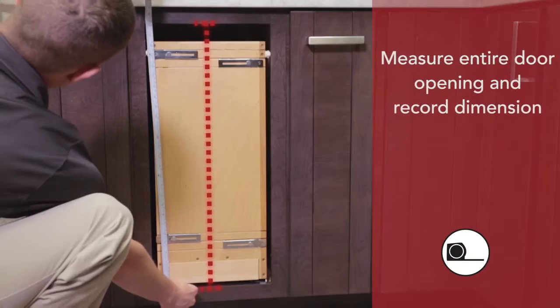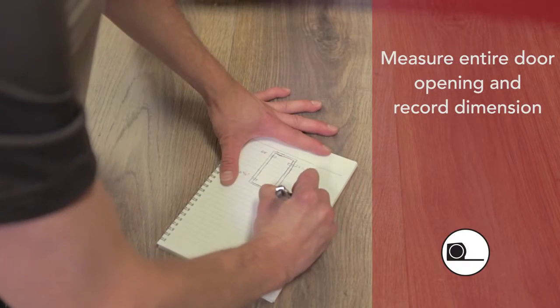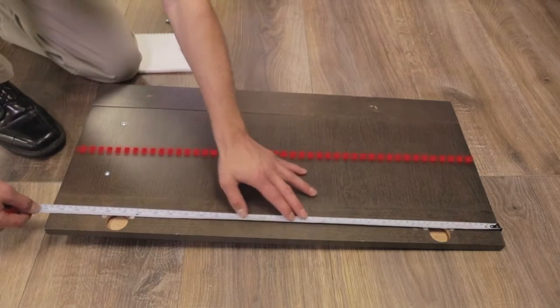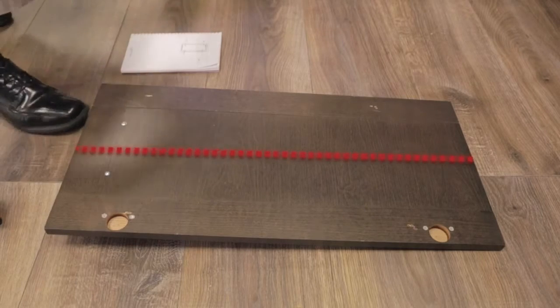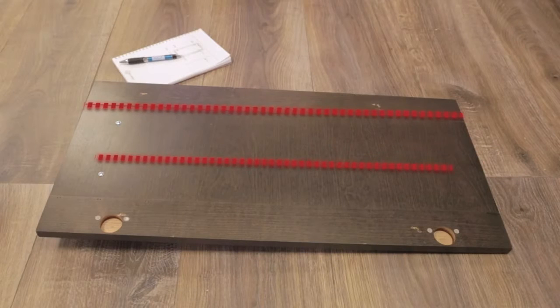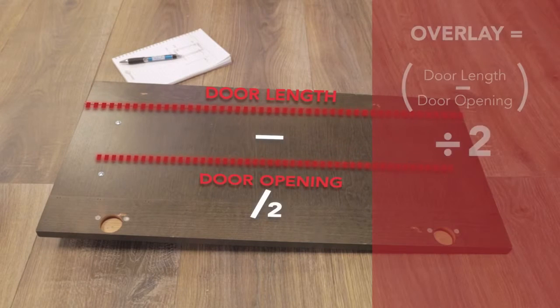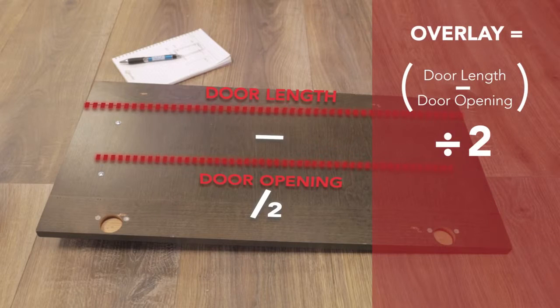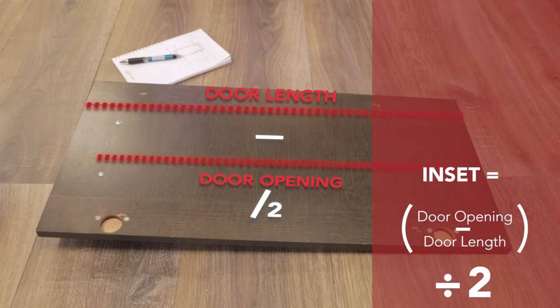Measure the entire door opening and record that value. Now measure the entire height of your cabinet door. In our case we have a full overlay door, so the door is larger than the opening. No worries. We will just take the length of our door and subtract the door opening. Simply divide this number by two and you will have the dimension you need to add to the four AMB hole location dimensions you previously recorded.